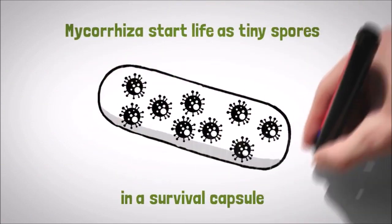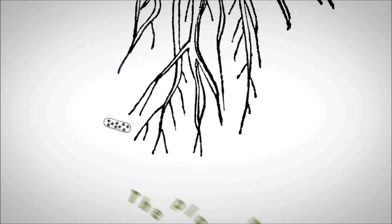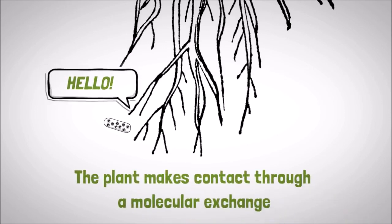Mycorrhiza start life as tiny spores in a survival capsule. When a plant root grows close to a spore, the plant makes contact, first through a molecular exchange.